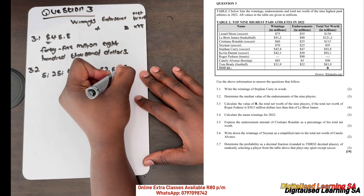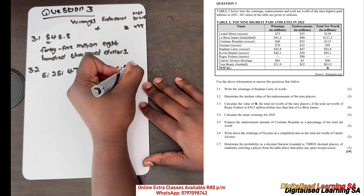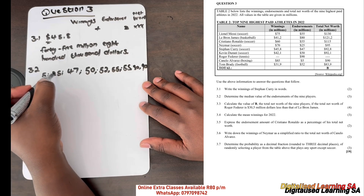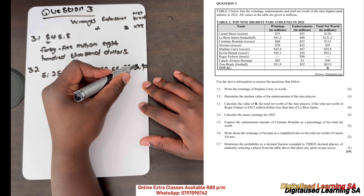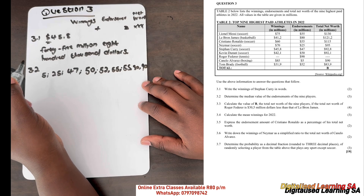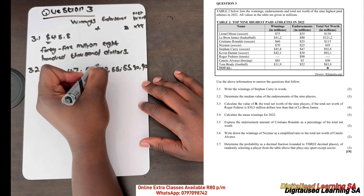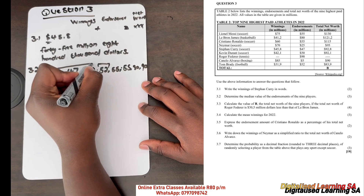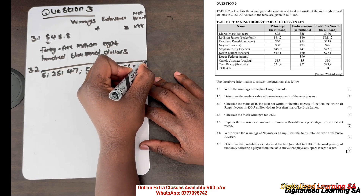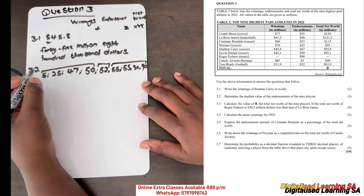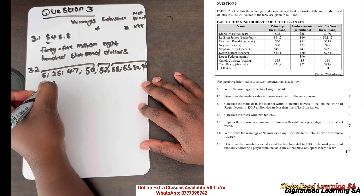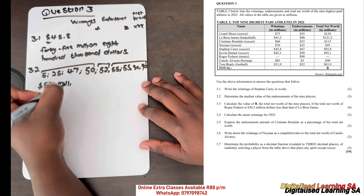Continuing the ordered list: 55, then 80, then 90 — nine values in total: 1, 2, 3, 4, 5, 6, 7, 8, 9. The middle value, the median, is 52 because there are four values on each side. So our median is 52 million.